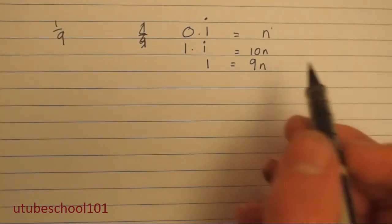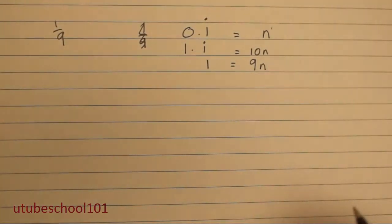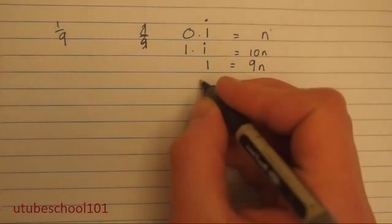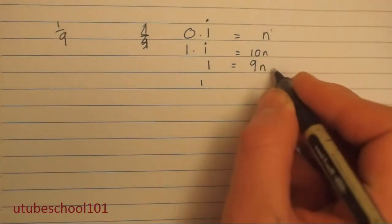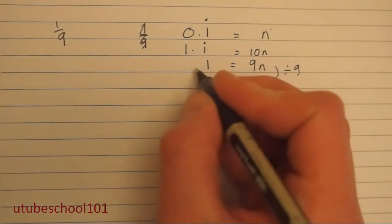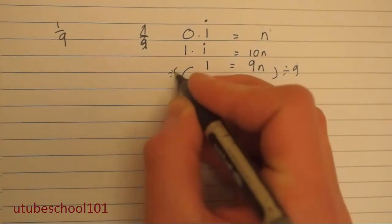Now we want to get n on its own, so we can have a proper value for it. So we're going to divide by 9 on this side, and divide by 9 on the other side.